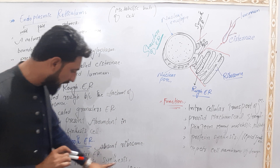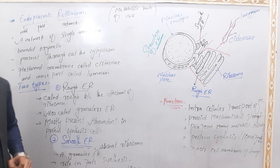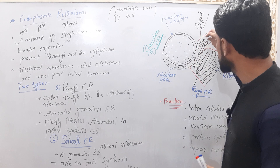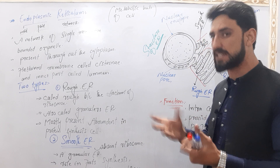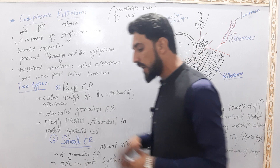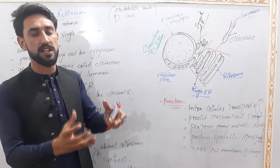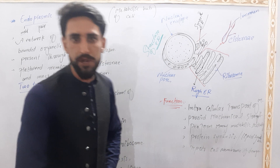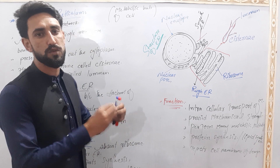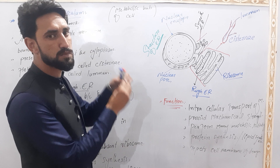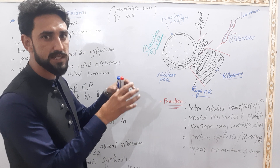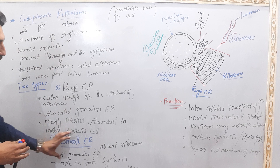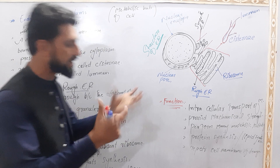The smooth endoplasmic reticulum plays a role in lipid and fat synthesis. It is abundant in adipose tissue. Since there are no ribosomes attached, protein synthesis does not take place in the smooth endoplasmic reticulum; instead it is involved in fat synthesis.